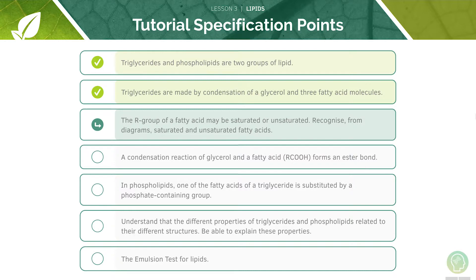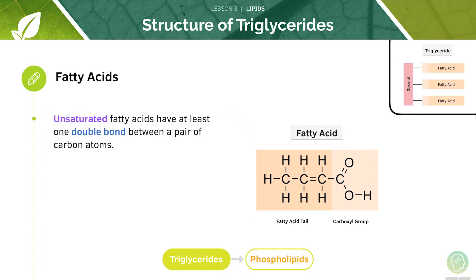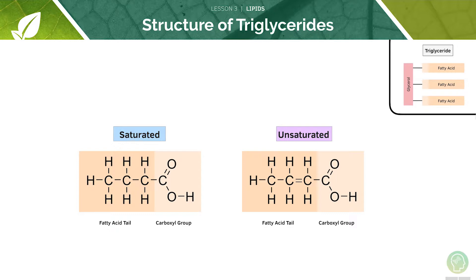Next, we will look at the R group of fatty acids. The R group of a fatty acid can be saturated or unsaturated. Saturated fatty acids have no double bond between the carbons. Unsaturated fatty acids have at least one double bond between a pair of carbon atoms — they will have some double or triple bonds, or a combination of both, in addition to single bonds. Here is a comparison of the two structures.